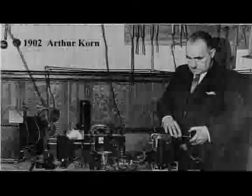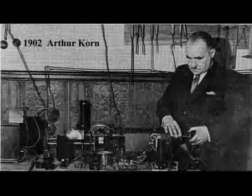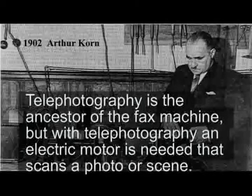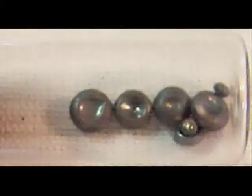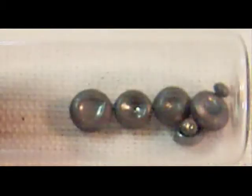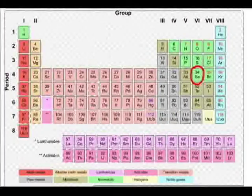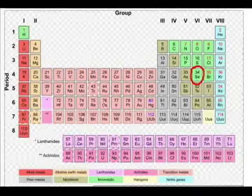In 1902, Arthur Korn in Germany invents telephotography, the ability to send a photo electronically through wire. These devices use the light-sensitive metal selenium to convert the different tones of a scanned image into a varying electric current.